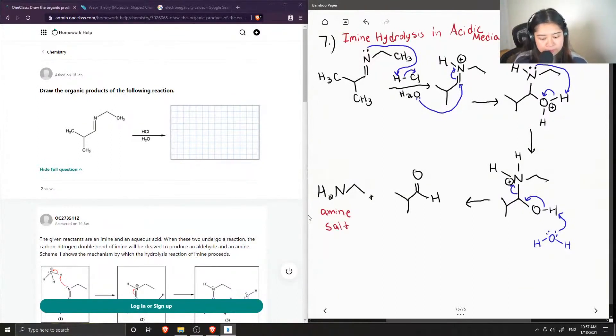And let's name this compound, it is a three carbon chain that has an aldehyde group and a methyl on carbon-2, so this is called 2-methylpropanal.